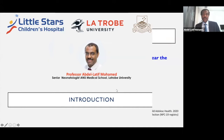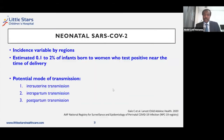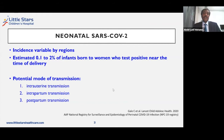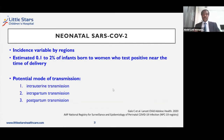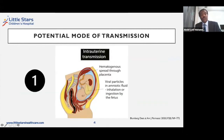The incidence of neonatal COVID is very variable and depends on different regions in the world. Obviously, there are many cases reported in India in the recent outbreak, similarly in Europe and the US, but overall the estimated incidence in newborns is estimated to be between 0.1 to 2% of infants born to mothers who test positive near the time of delivery. Similar to other infections in the neonatal period, there are three modes of transmission for neonatal COVID: intrauterine transmission, intrapartum, and postpartum transmission.